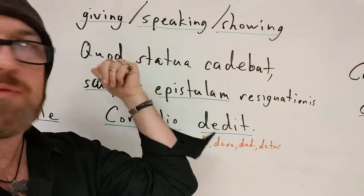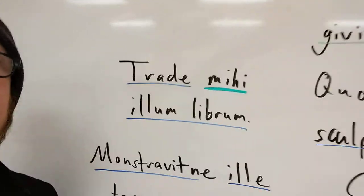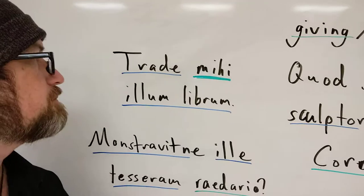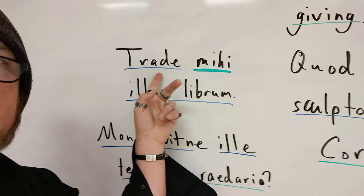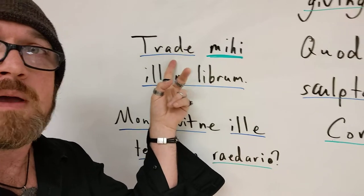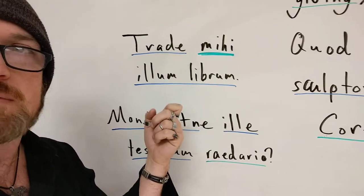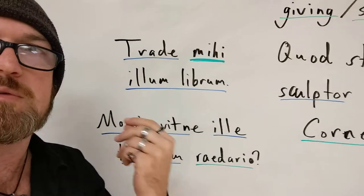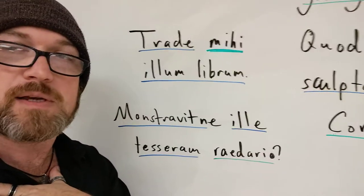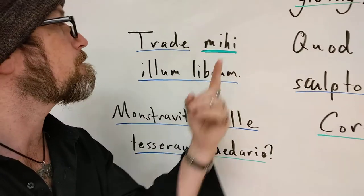Anytime you have any verb in this range of things, you can and likely will have a dative. Here's another example: 'Trahe mihi illum librum' — hand me that book. Instead of having a written-out subject, I've got an imperative verb with an implied subject of 'you.' This imperative verb is taking a direct object, illum librum. Hand me that book — you would be the subject, handing is what I want you to do, the book is the direct object. And I want you to hand it to me, so I am the recipient of the book, which is why mihi here is in the dative form of our first person personal pronoun.